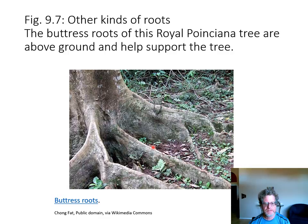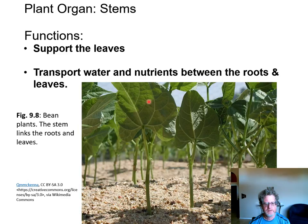These are buttress roots — they come out of the ground and support a heavy tree, and that's more common in tropical areas. Moving on from roots to stems: stems hold the leaves up and also connect the leaves to the roots in the ground.